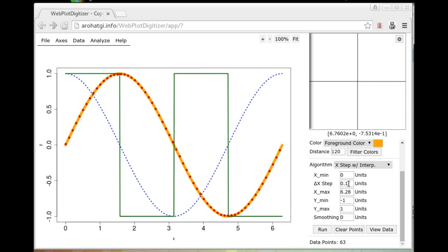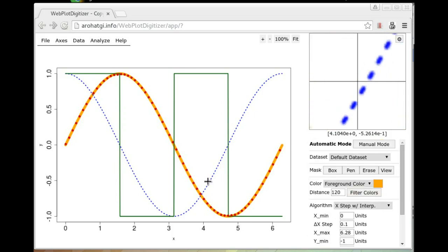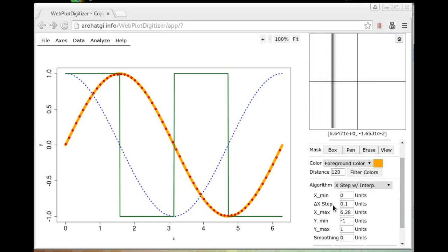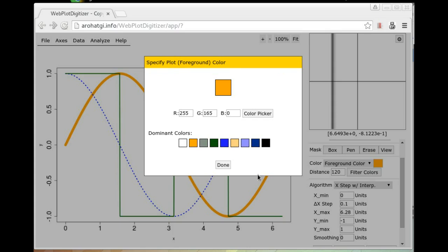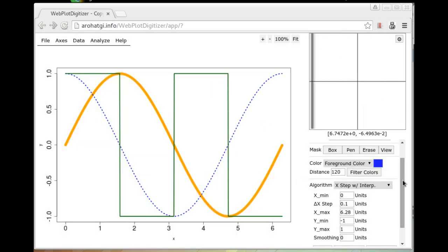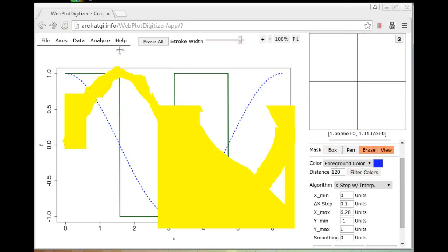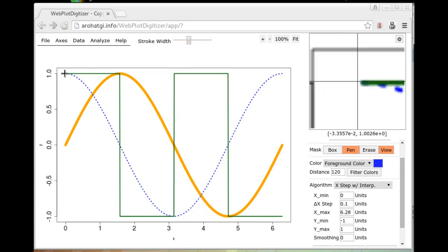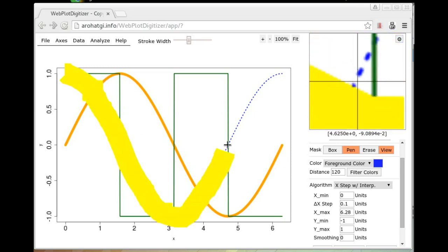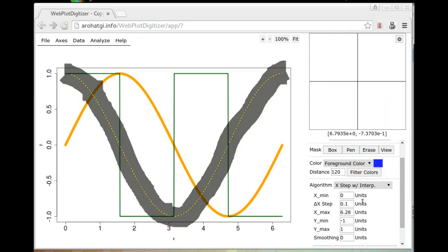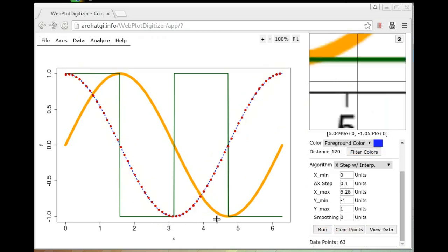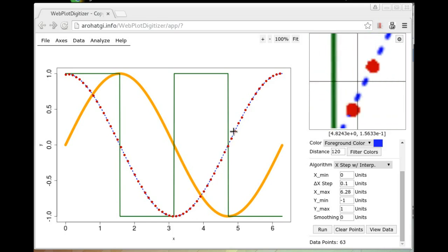The X step with interpolation algorithm is particularly good for discontinuous data points like the blue dotted curve here. Since this uses cubic splines for interpolation, it can also detect points in between the colored regions. So for example, if we switch over to the blue curve. We can see the data points have been selected even in between the discontinuous regions.